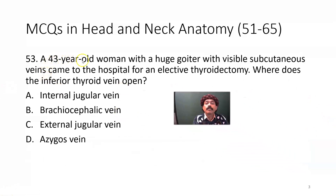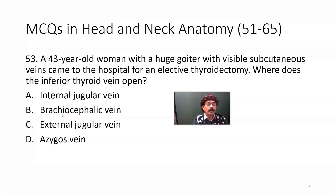A 43-year-old woman with a huge goiter — goiter means enlargement of the thyroid gland — with visible subcutaneous veins came to the hospital for an elective thyroidectomy. Where does the inferior thyroid vein open? It opens into the left brachiocephalic vein in most cases, and rarely into the right brachiocephalic vein. Not the internal jugular vein — the internal jugular vein receives the middle thyroid vein and also the superior thyroid vein. The external jugular vein does not receive the thyroid veins. The azygos vein is not related to the thyroid vein.